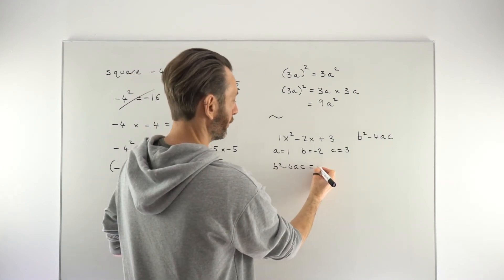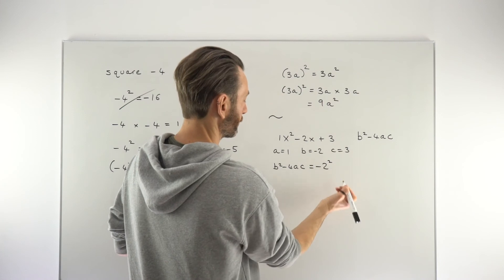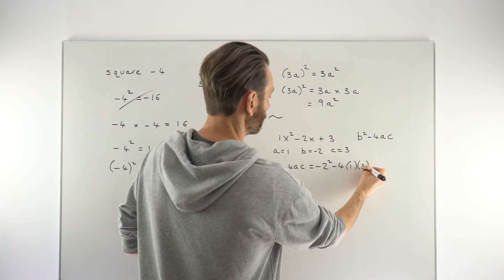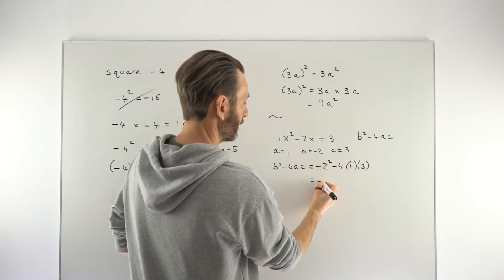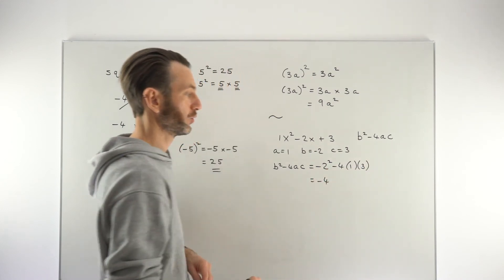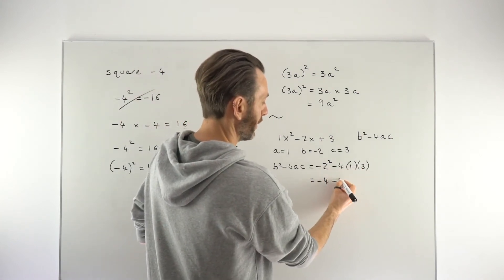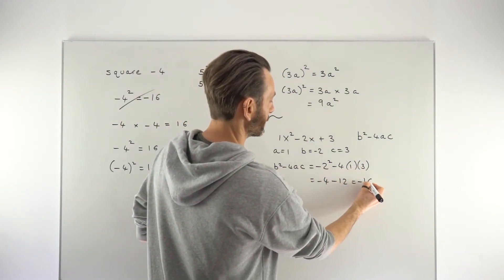So students will go, okay, it's minus 2 squared, like that, and then minus 4 times the a value, which is 1, and then the c value, which is 3. Minus 2 squared is going to be minus 4. And then 4 times 1 is 4, times 3 is 12, minus 12, and then they get minus 16.